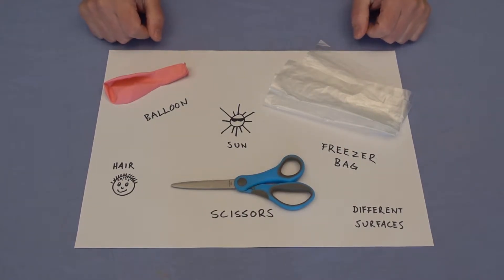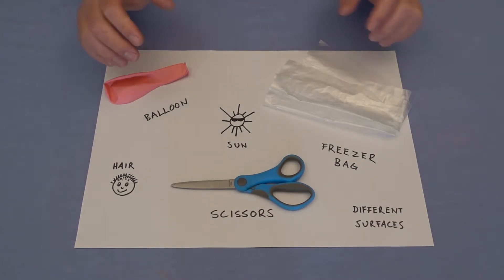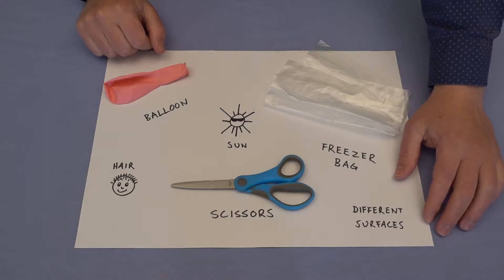Then we need a couple of different materials to charge these things up with. For one we're going to use your hair. Now if you're follically challenged, don't worry, you could use a woolen jumper or the carpet or something like that. And you might need to play around with different surfaces to get this working.